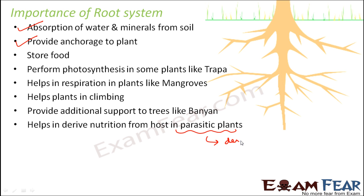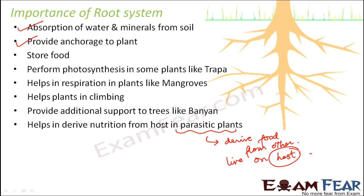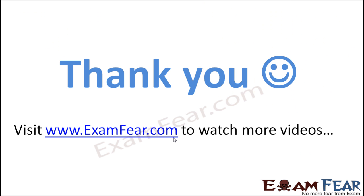Roots also help parasitic plants derive nutrition from host plants. Parasitic plants are those that receive their food from other plants — they live on other plants, called host plants. In many such parasitic plants, the roots help them receive nutrition from the host plant.